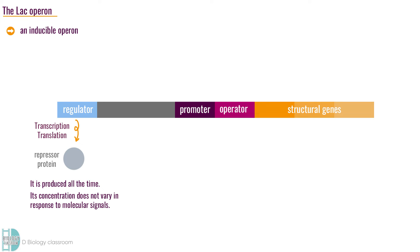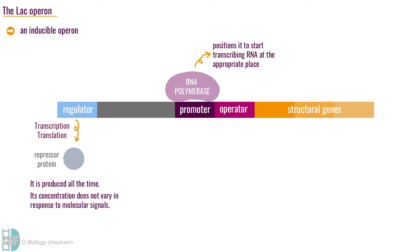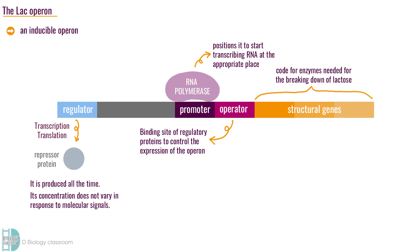The promoter is a specific nucleotide sequence in DNA that binds RNA polymerase, positioning it to start transcribing RNA at the appropriate place. The operator is the binding site of regulatory proteins to control the expression of the operon. The structural genes code for enzymes needed for the breaking down of lactose.